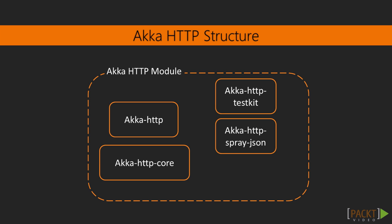Next, we have Akka HTTP Spray JSON, which contains predefined glue code for serialising and deserialising custom types from and to JSON with Spray JSON. It is possible to use Akka HTTP with other JSON serialisers, and there exist community projects providing these integrations if you prefer to use something other than the Spray JSON library, which is very fast but requires a bit of coding to set up. Lastly, we have Akka HTTP XML, which contains predefined glue code for serialising and deserialising custom types from and to XML with Scala XML.